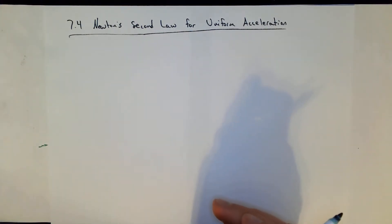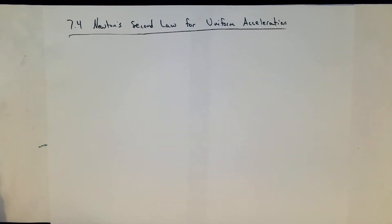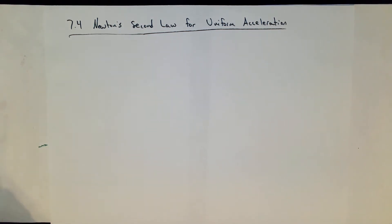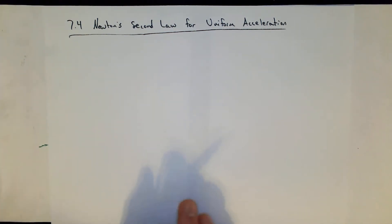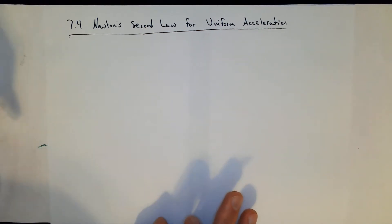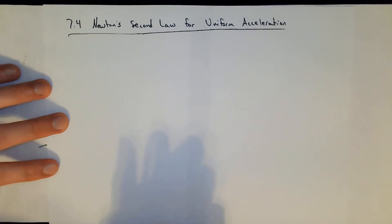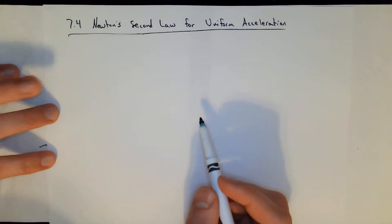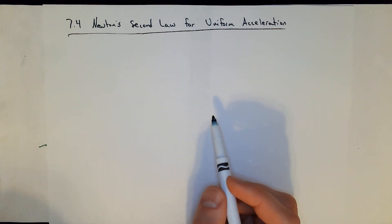This is 7.4 Newton's Second Law for Uniform Circular Motion. In uniform circular motion, there is still centripetal acceleration. The first thing to note is that this centripetal acceleration can only exist if there is something causing it.